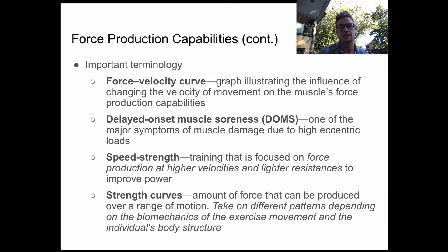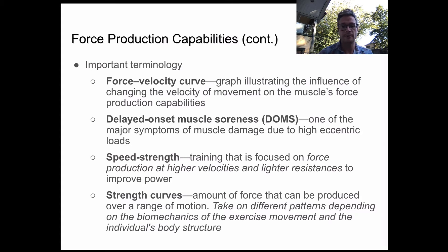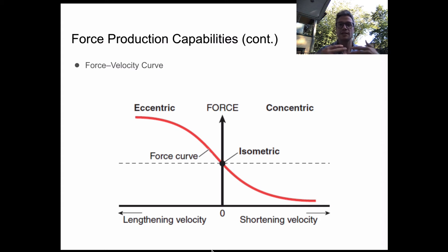What that graph illustrates is how at different velocities, our muscles have different capacities to produce force. We have lengthening velocity and shortening velocity because we're speaking about eccentric and concentric contractions. Concentric means shortening; eccentric is elongating. Right in the middle of the graph is our isometric — when we have an isometric contraction, there's no movement, so there's no velocity.